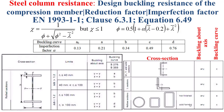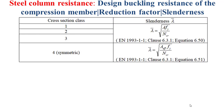The slenderness lambda-bar is determined based on the table shown in this slide, and as you can notice it depends on the cross-section class. For cross-section classes one, two, and three, lambda-bar is expressed as the square root of the cross-section area A multiplied by the yield stress fy, divided by NCr. For cross-section class four, the effective cross-section area is used instead. NCr is determined by the formula shown in this slide.